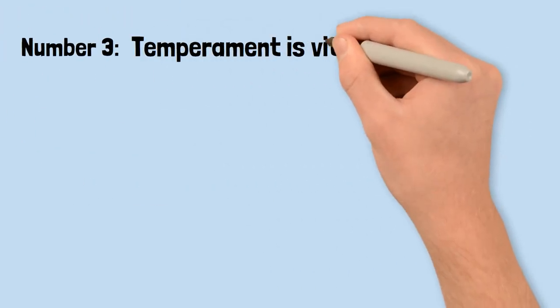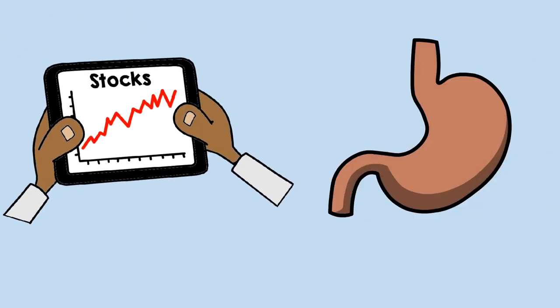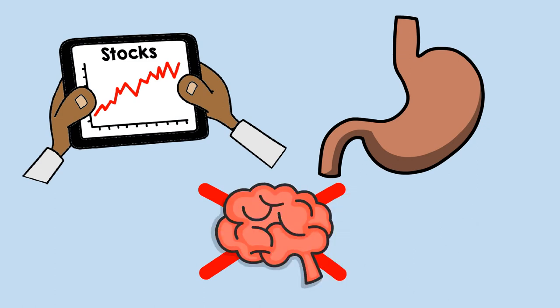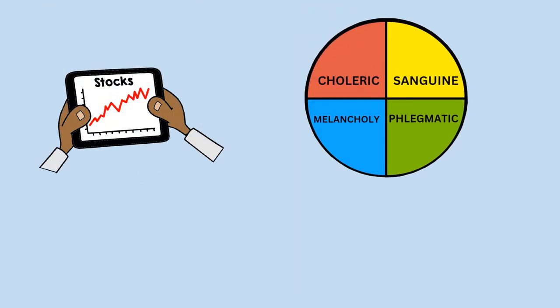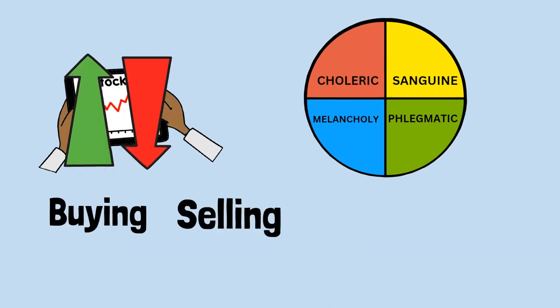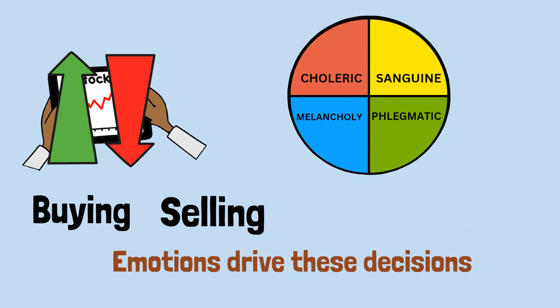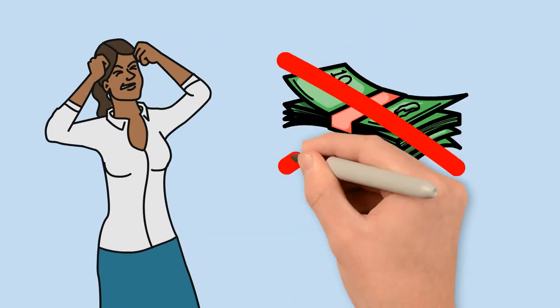Number 3: Temperament is vital to success. In the stock market, the most important organ is the stomach, it's not the brain. Lynch stresses the importance of having a strong temperament, especially in the stock market. Stocks rise and fall due to buying and selling of other investors, and too often, emotions drive these decisions. Without a level head, many investors suffer losses.